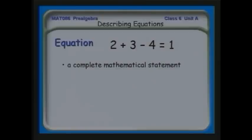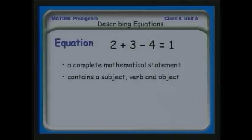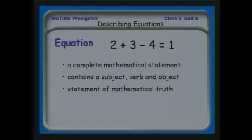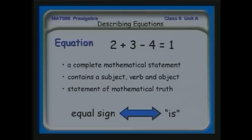You can think of an equation like a sentence. It says something — that's what's on the left — 'is equal to' — that's the verb, the equal sign — something else. If you're grounded in grammar, an equation has a subject (what's on the left), a verb (the equal sign, meaning 'is equal to'), and an object (what's on the right). It's a statement of mathematical truth, and the equal sign is the assertion of truth: this is this.